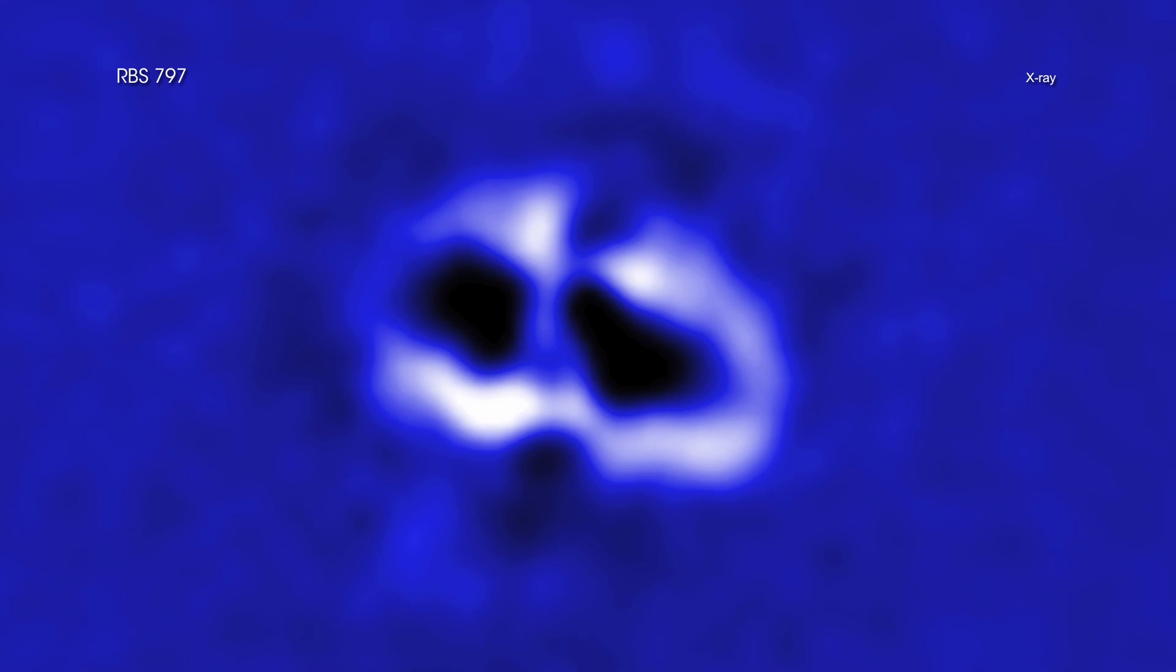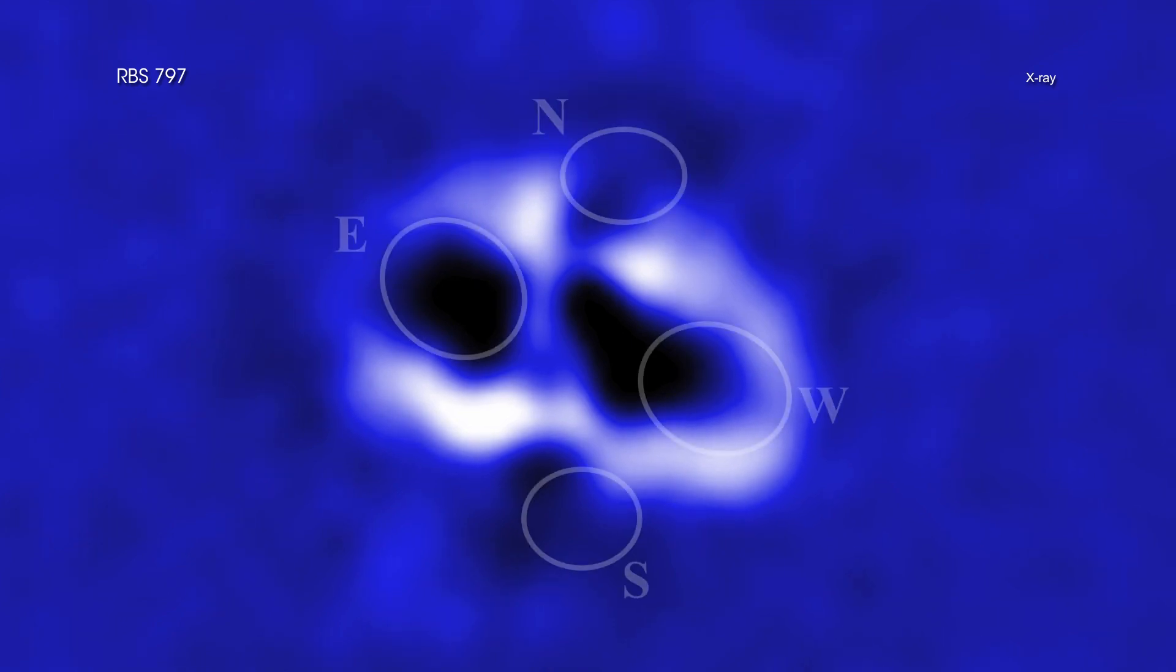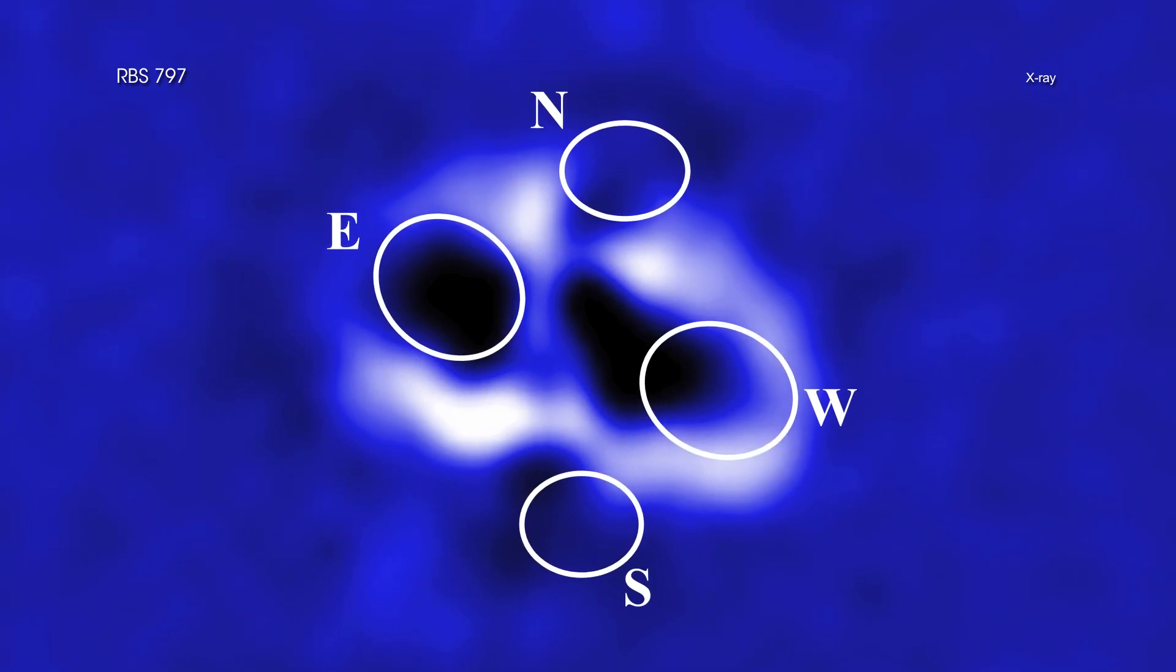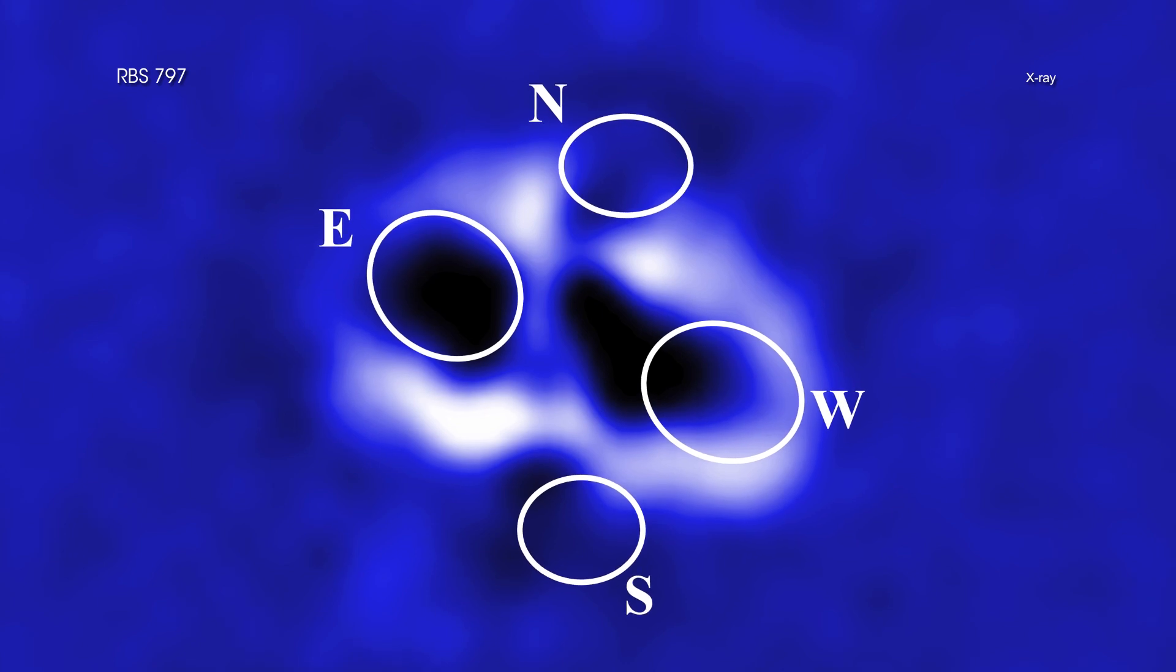A new Chandra study of the galaxy cluster known as RBS 797, located about 3.9 billion light-years from Earth, uncovered two separate pairs of cavities extending away from the center of the cluster.